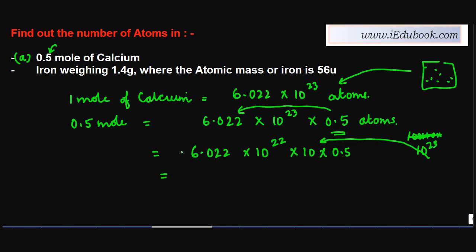10 × 0.5 is 5. This gives me 3.011 × 10^22 atoms. So 0.5 mole is going to contain this many number of atoms.